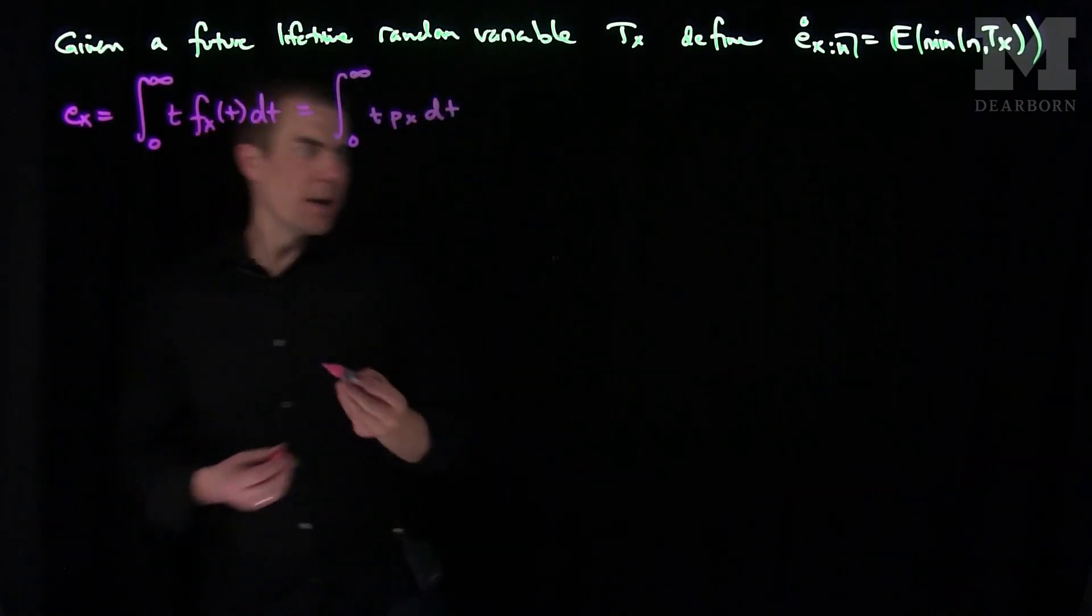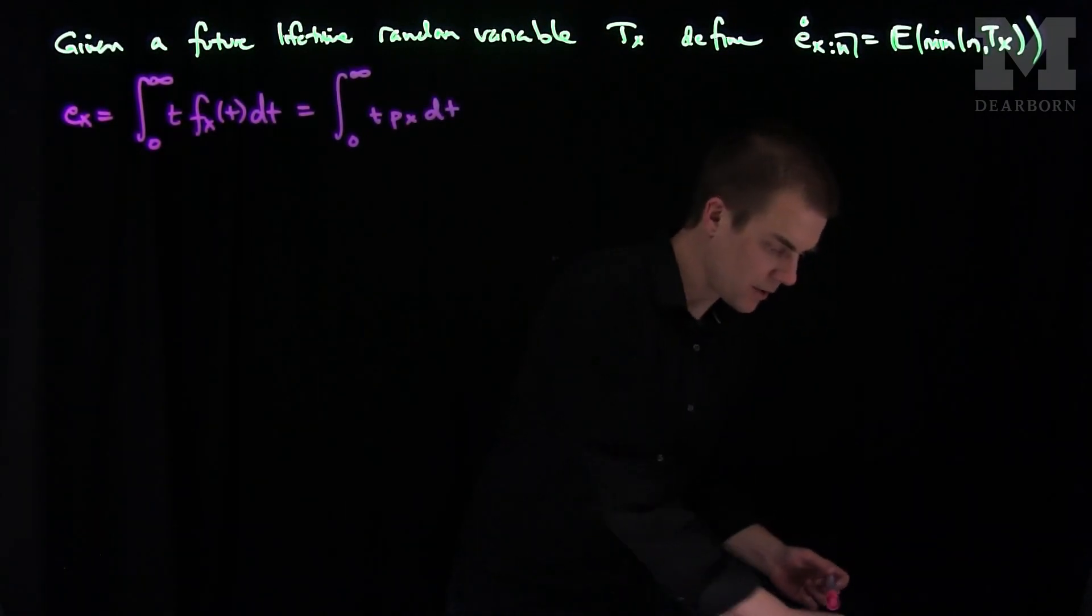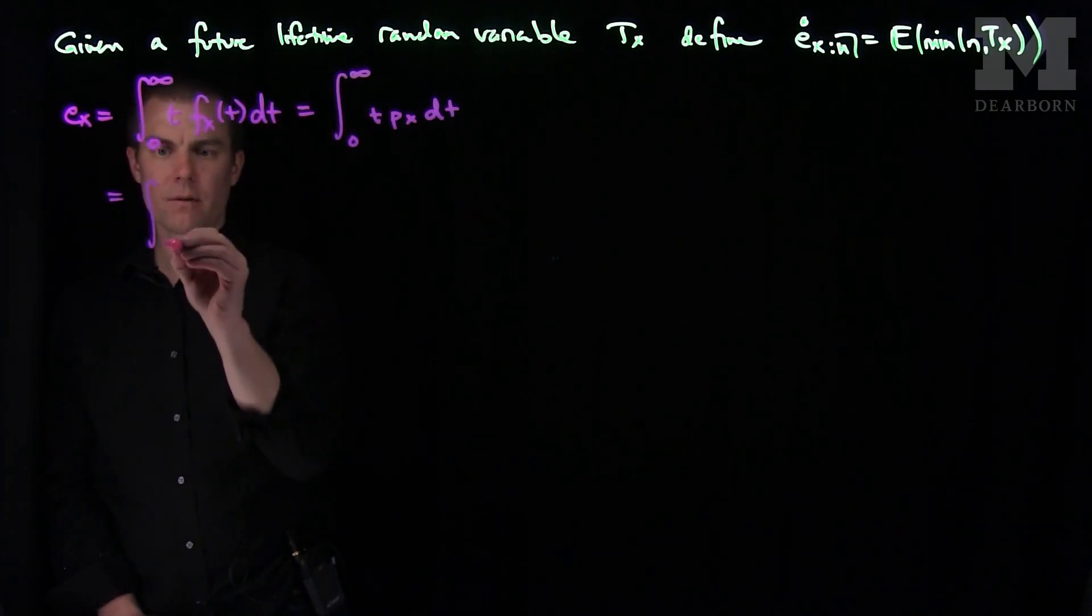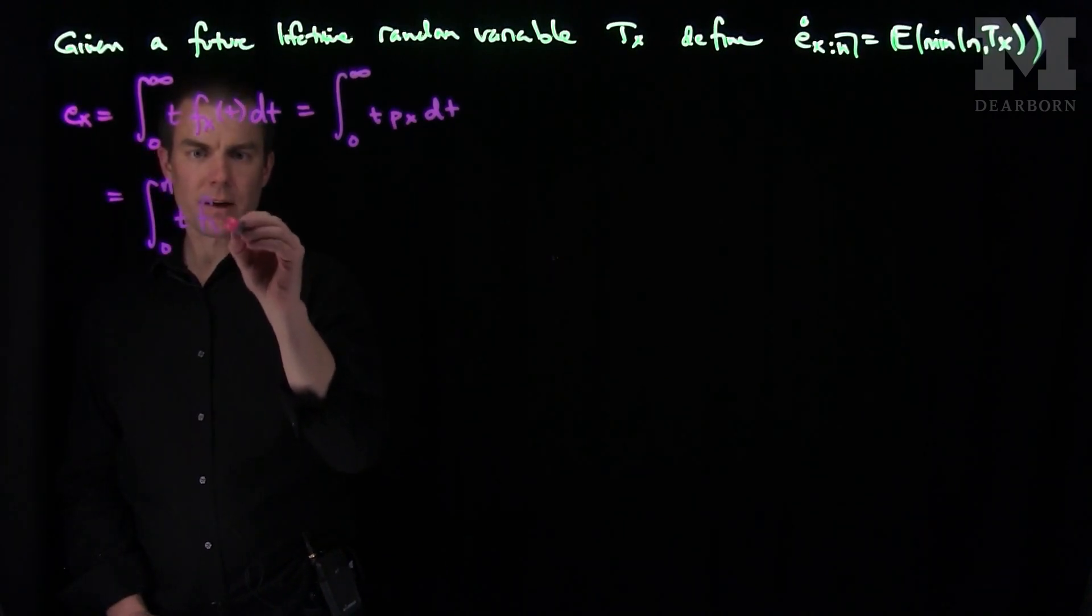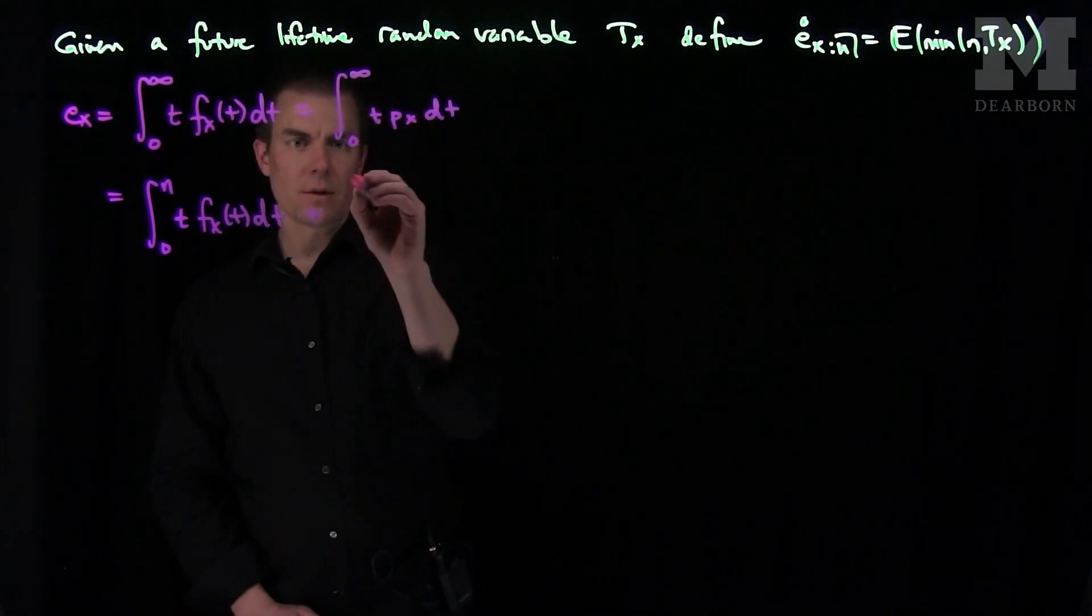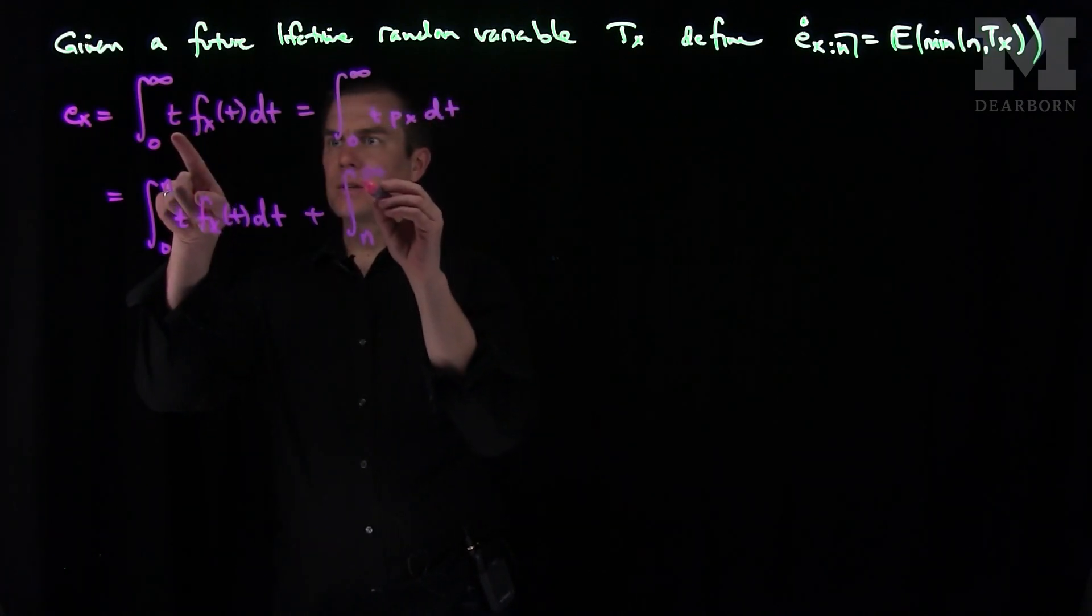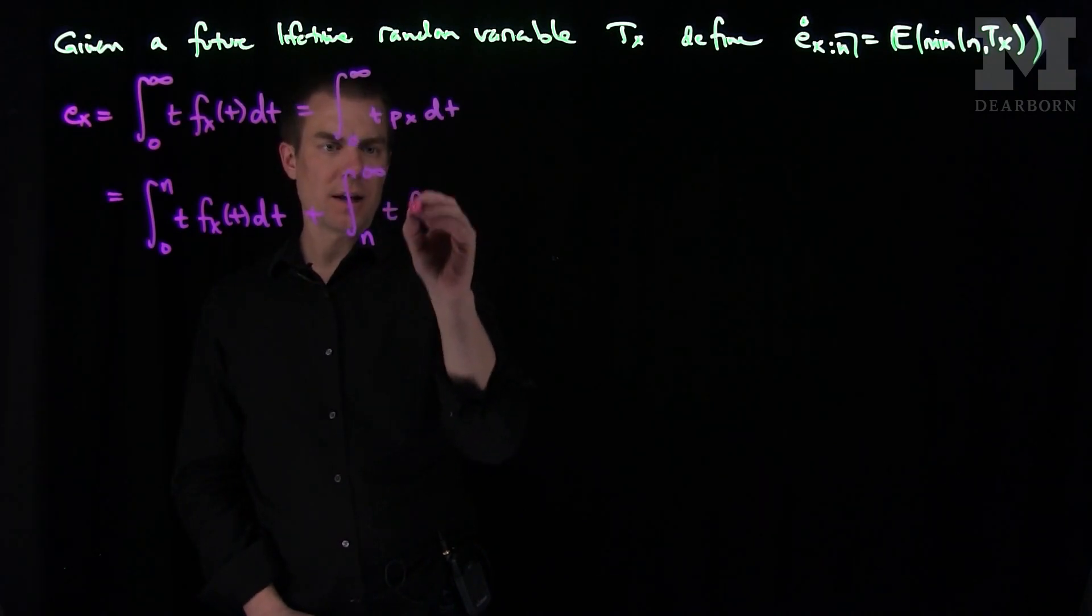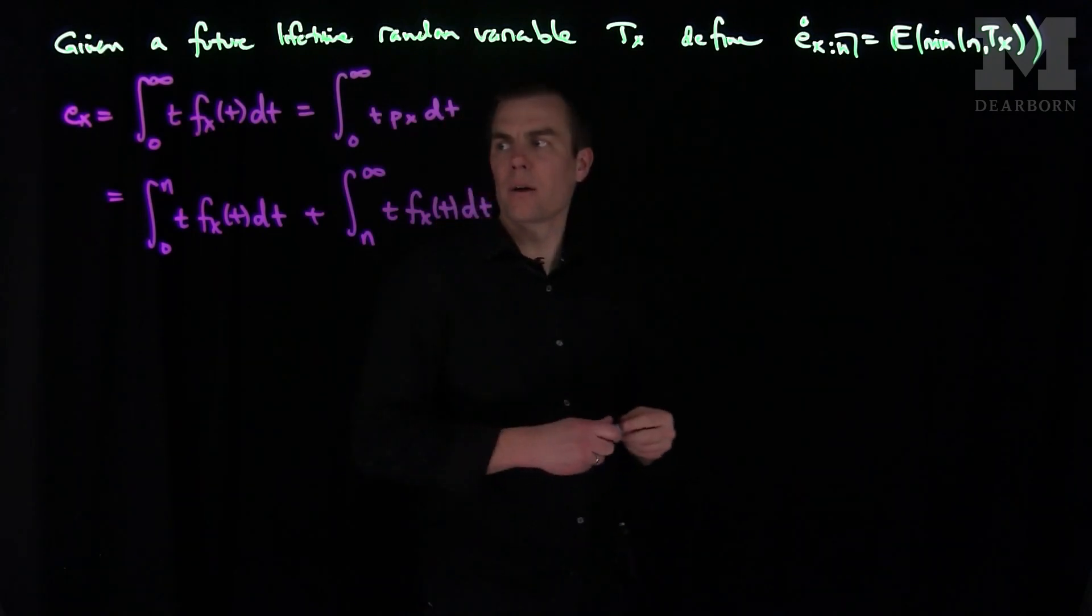Now what we can do is we can compare that with this expected value. So I can take this expression and write this as the integral from 0 to n of t f(x,t) dt, and then plus the integral from n to infinity. I can either use t f(x,t) or t px. So in this case we'll use t f(x,t) dt.